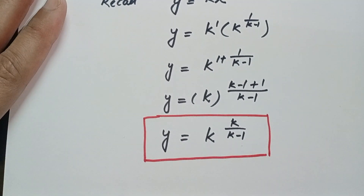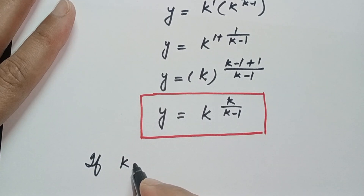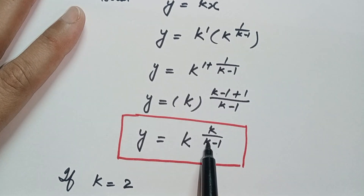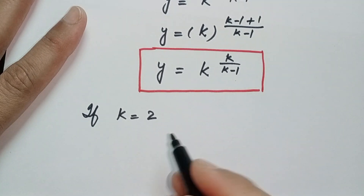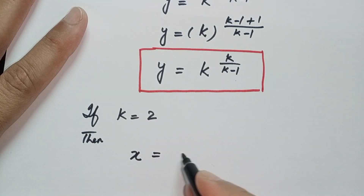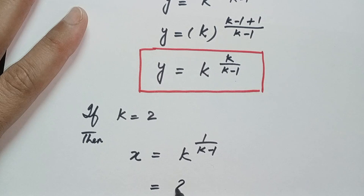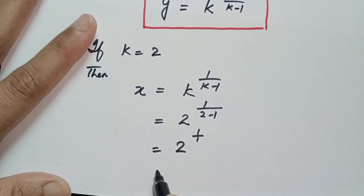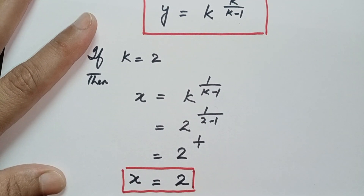We now have both x and y in terms of k. For numerical values, we note that k cannot equal 1 because 1 minus 1 gives 1 over 0, which is undefined. So we start from k equal to 2. For k equal to 2, x is equal to 2 to the power 1 over 2 minus 1, which is 2 to the power 1 over 1, so x is equal to 2.